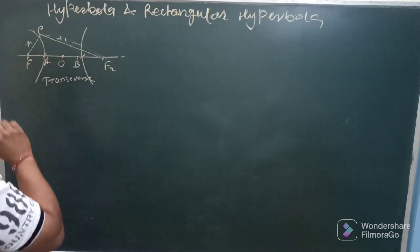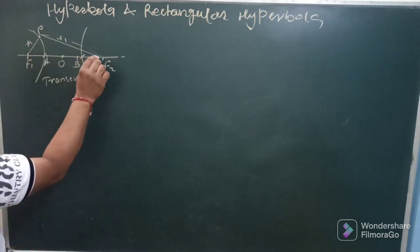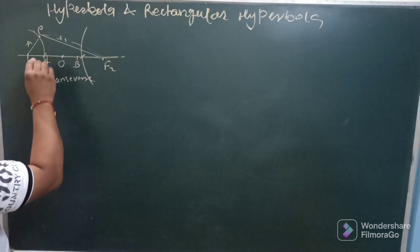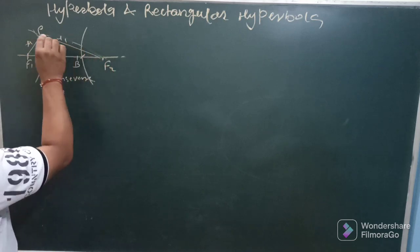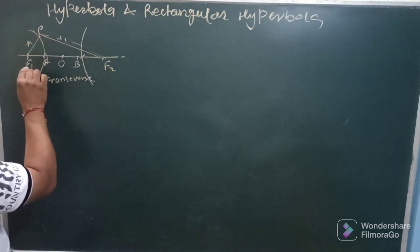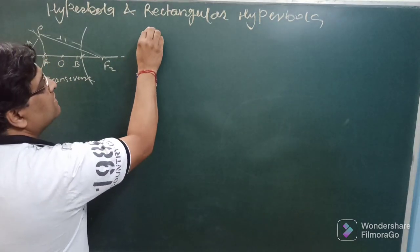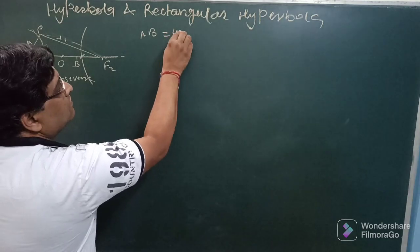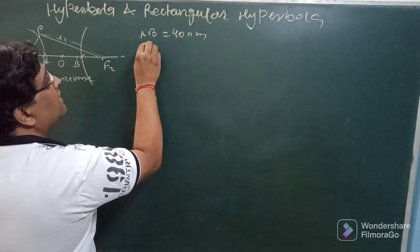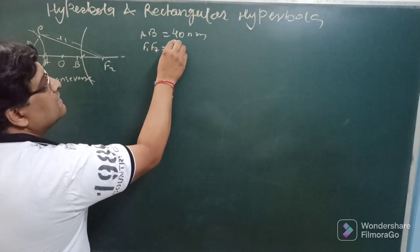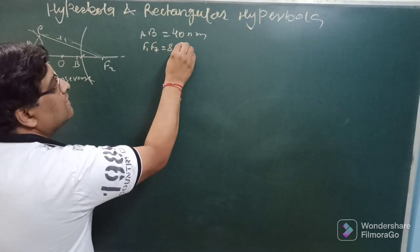So this ab is termed as transverse axis, f1 and f2 is the distance between the two focus. According to definition, this y1 minus x1 will be equal to ab. Let us consider that ab is given as 40 mm and f1 and f2 is provided equal to 80 mm.